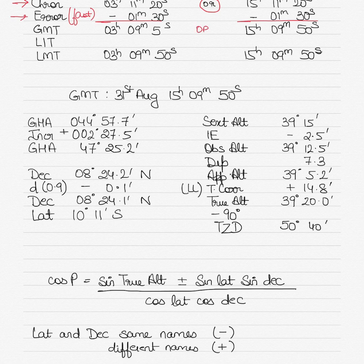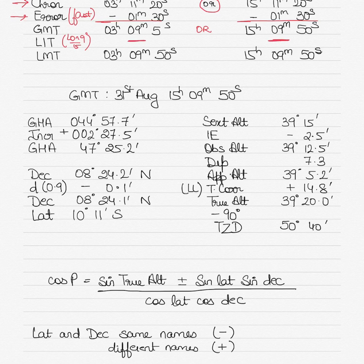To find the correct GMT option, we apply the longitude in time (LiT) correction by dividing longitude by 15. Since longitude is 0 degrees 0 minutes, dividing by 15 gives 0 — so there is no LiT correction. The resulting LMT is therefore the same as GMT: either 3 hours 9 minutes 50 seconds or 15 hours 9 minutes 50 seconds.